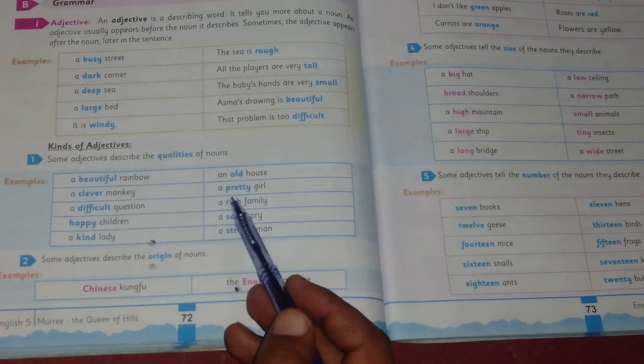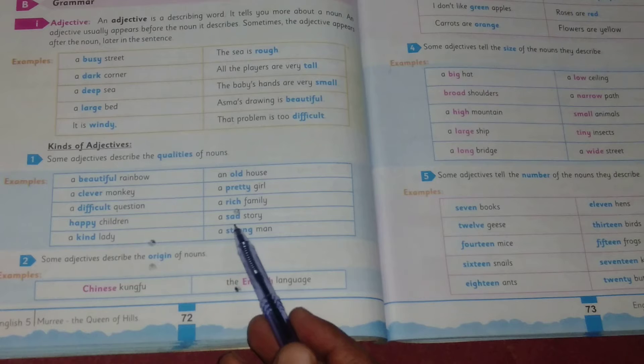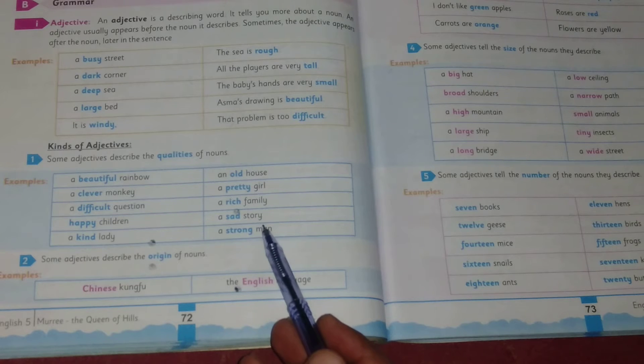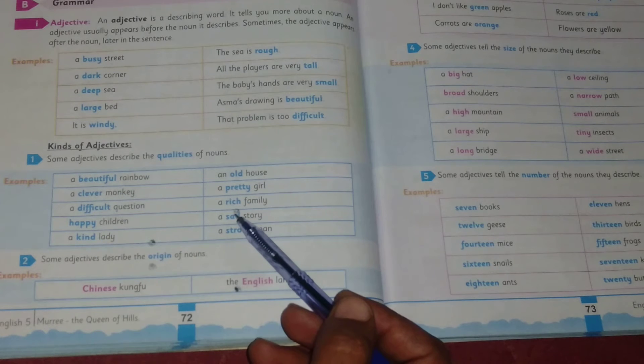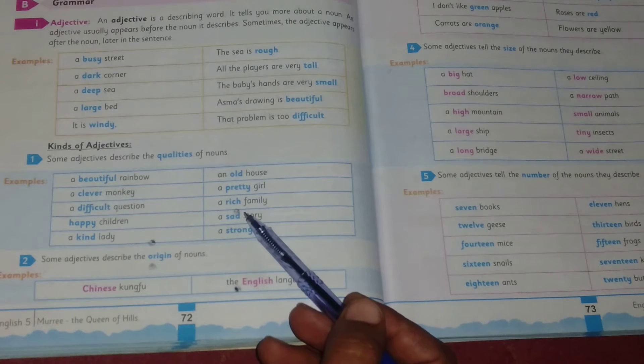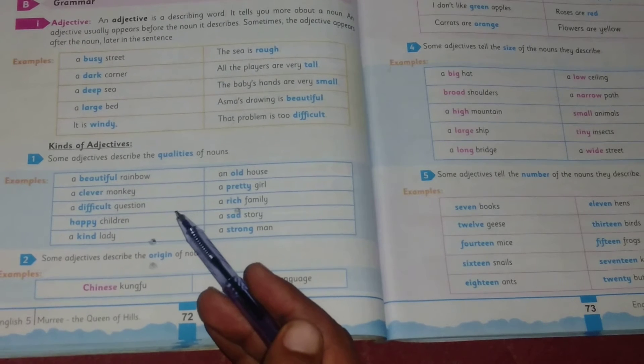An old house, a pretty girl, a rich family, a sad story, a strong man. So all these are adjectives of quality. It tells how the noun is.